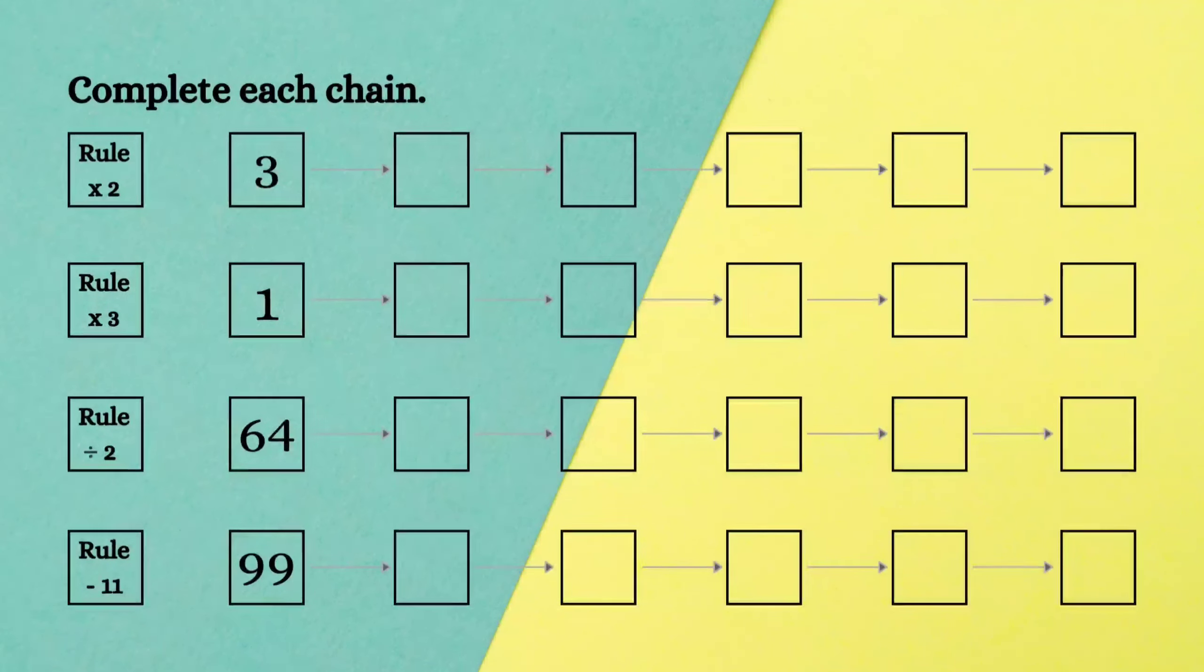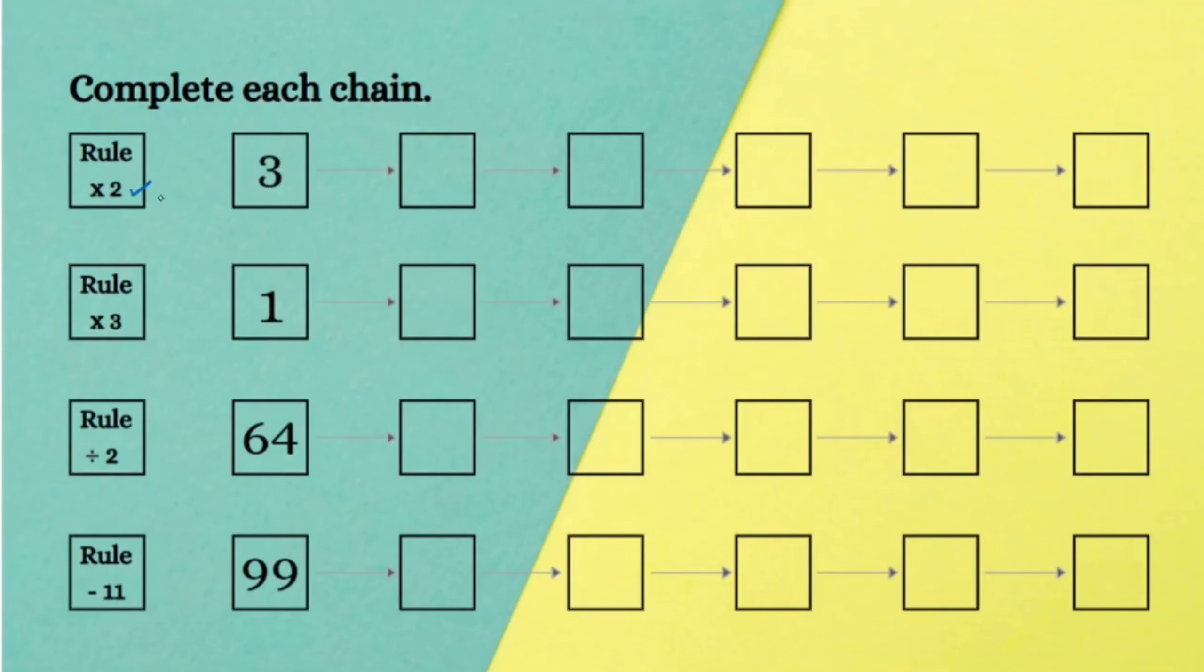The next worksheet is complete each chain. The rule for the first question is multiply 2: 3 times 2 is 6, 6 times 2 is 12, and so on. In the second question the rule is multiply 3: 1 times 3 is 3, 3 times 3 is 9, 9 times 3 is 27, and so on.